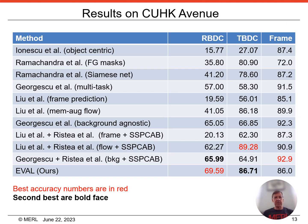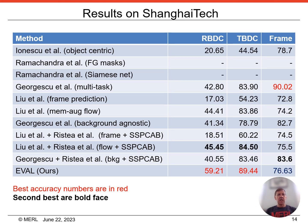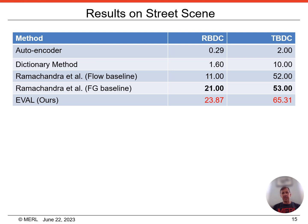Here we share results on CUHK Avenue using the RBDC, TBDC, and frame-level evaluation criteria. RBDC and TBDC accurately measure spatial as well as temporal localization, while frame level only measures temporal localization. Results in red are the best accuracy for each criteria, while results in black boldface are second best. Our method does best for RBDC and second best for TBDC on this dataset. For the Shanghai Tech dataset, we achieve state-of-the-art results for both the RBDC and TBDC criteria. Street Scene is one of the most difficult test sets and is the only one to have a significant number of location-dependent anomalies, meaning anomalies such as jaywalking or biking in the wrong lane, for which an activity is normal in some locations and anomalous in others. Here we improve over the previous state-of-the-art for both the RBDC and TBDC criteria.